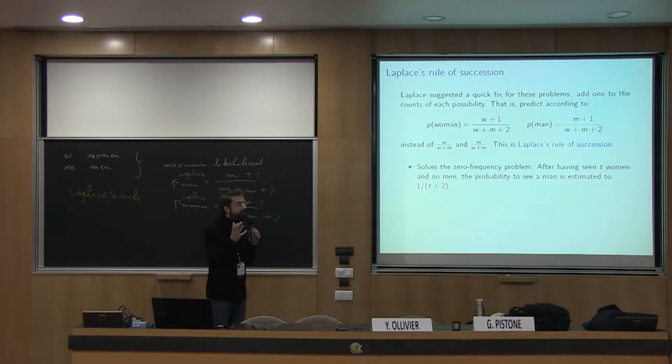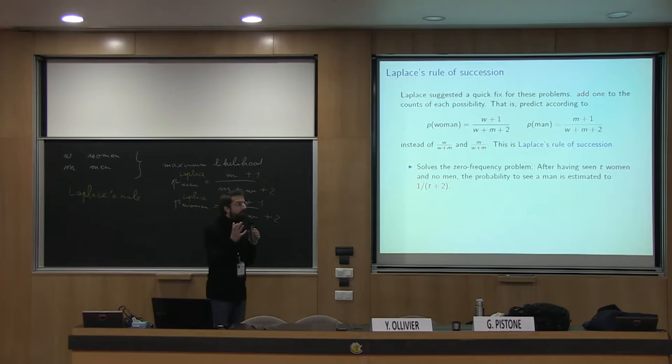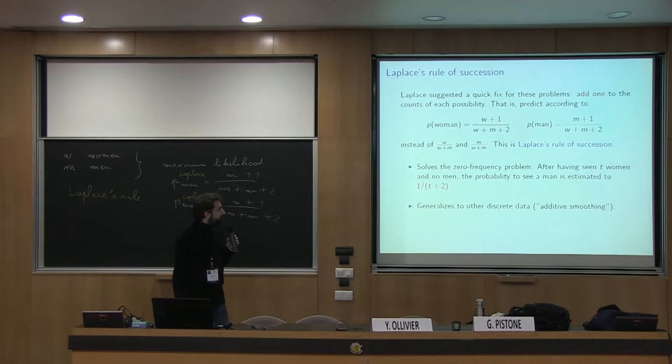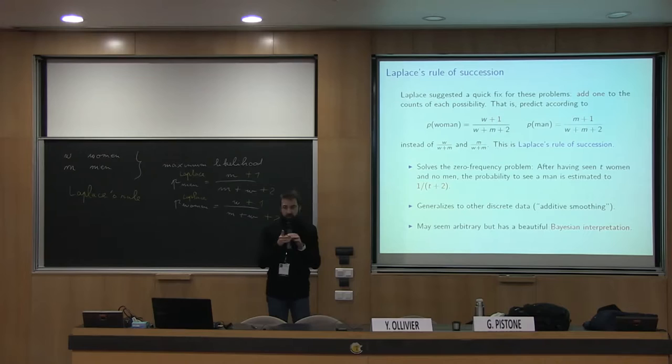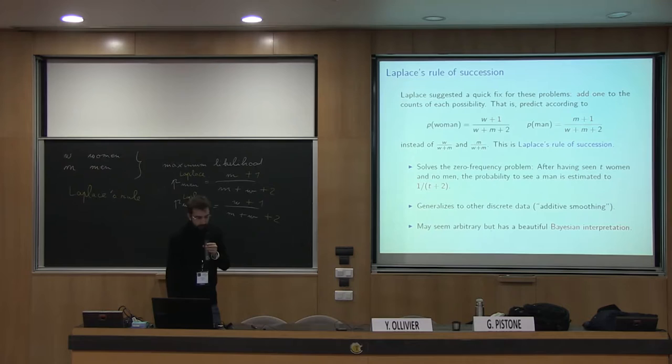We want to get the one over t term right. Laplace's rule generalizes to other discrete data. This rule, which may seem completely arbitrary, has a beautiful Bayesian interpretation which allows us to recover it from first principles — almost, but not exactly.